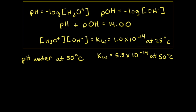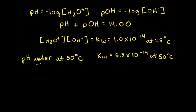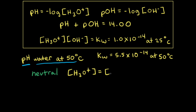Finally, let's look at an example where the temperature is not 25 degrees Celsius. Let's say we have a sample of pure water at 50 degrees Celsius and our goal is to calculate the pH. Pure water is a neutral substance, which means the concentration of hydronium ions, H3O+, is equal to the concentration of hydroxide ions, OH minus.